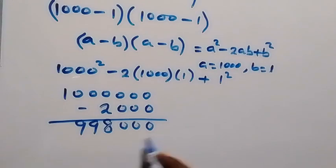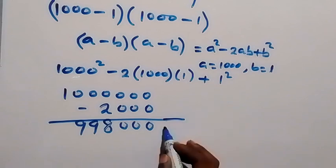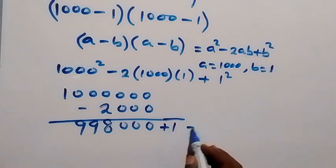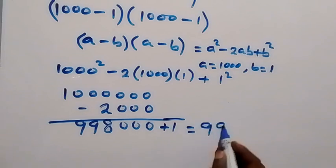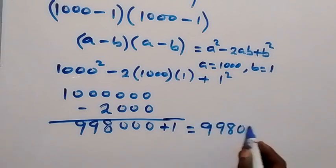Then when we subtract that, for this 2 we have this, then we had 1. 1 squared is 1. Then we add 1 to this. So this will simply be 998001.